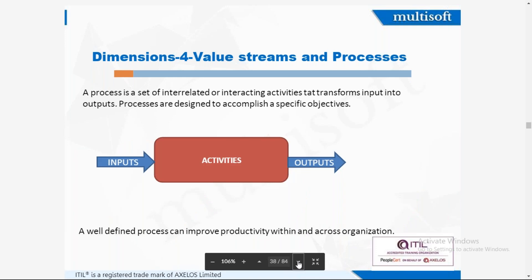A process is an interrelated or interacting set of activities — like an HR process — that transforms input to output. At least one input is required and at least one output is generated at the end of the activity. A well-defined process can improve productivity within an organization.